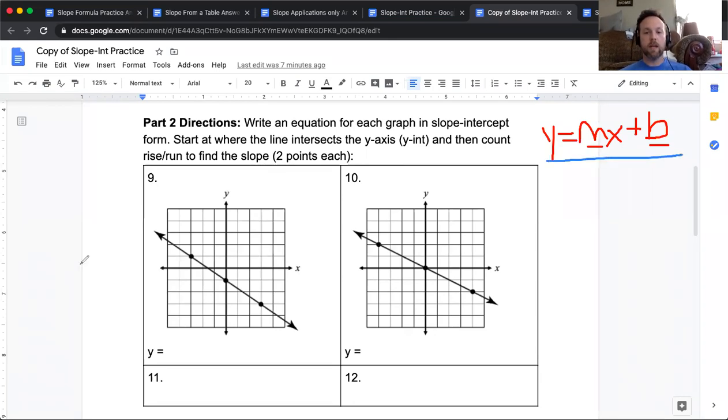Y equals mx plus b. I started you off with y equals. So every time when you're looking at a graph, and you're trying to figure out the slope and the y intercept, you start at zero, zero. Start at the origin, and then I'm going to look for where this graph, where this line crosses the y axis. And it crosses right here.